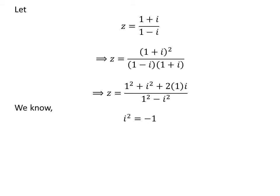We know that i² = -1. So, application of this property gives us z = (1-1+2i)/(1+1).